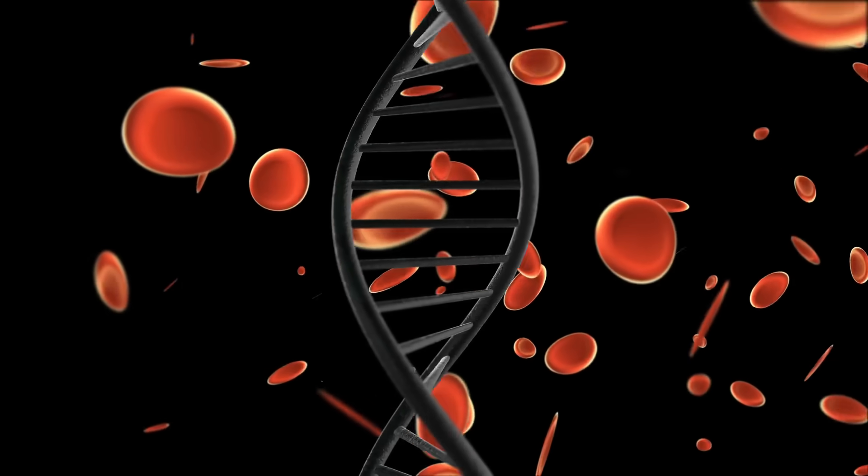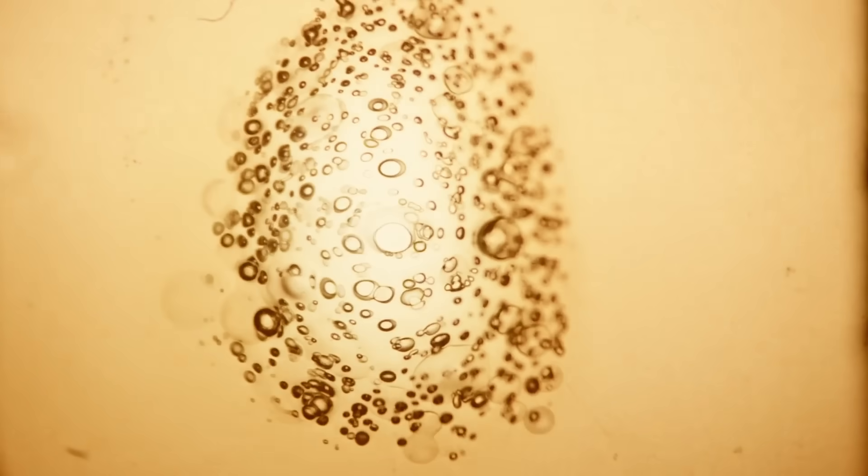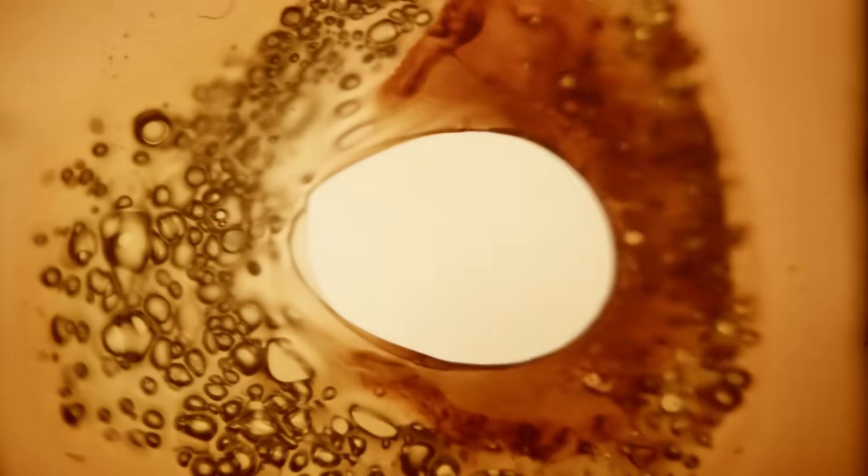All the living things in this world are made up of cells. Multicellular organisms are formed by the division of a single cell. A single cell divides into two cells, then after division of both the cells, we get four cells.